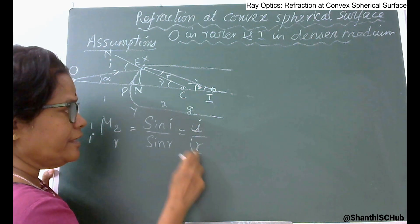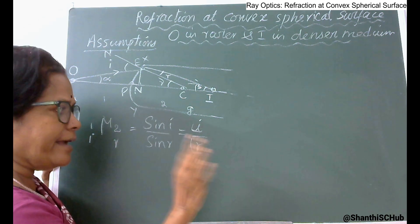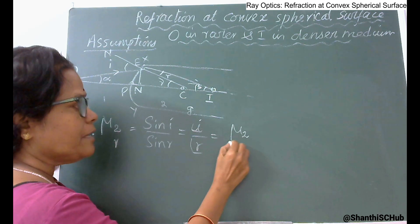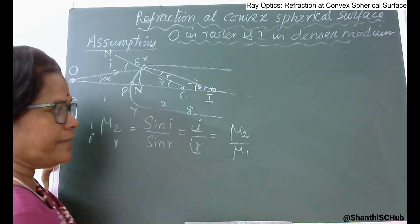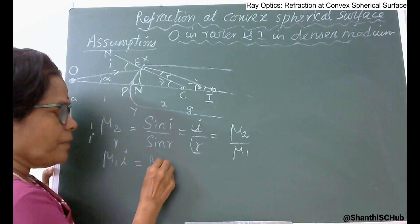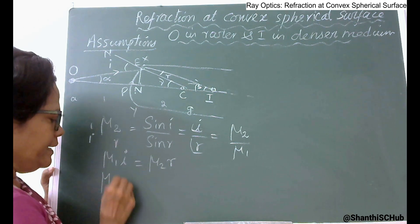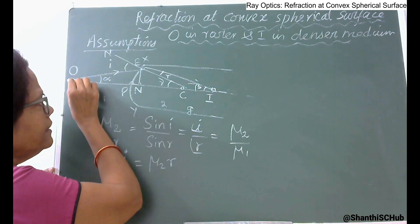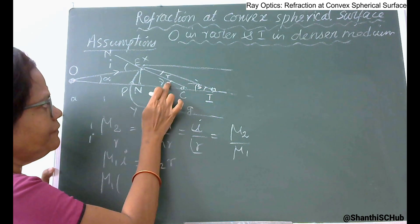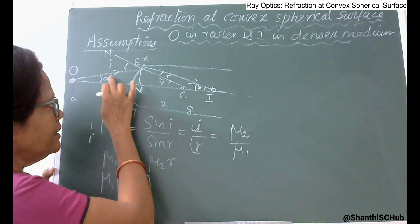Since the surface is of small aperture, i and r are small angles. Also, the refractive index of the second medium with respect to the first equals mu2 / mu1, so we can write: mu1 × i = mu2 × r. Now expressing i and r in terms of alpha, beta, gamma: i is the exterior angle of triangle EOC, so i = alpha + gamma.